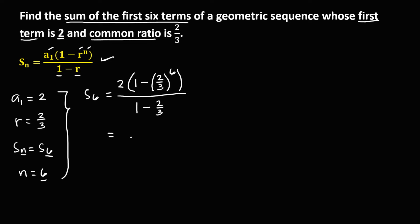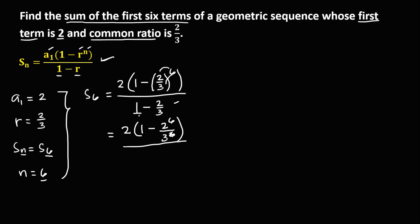Then simplify. So we have 2 times 1 minus — distribute this exponent — so we have 2 to the power 6 over 3 to the power 6. Then over, for this equation we can apply the butterfly method, so this one is over 1. So 1 times 3, that's 3, minus 1 times 2, that's 2, then over 1 times 3, that's 3.